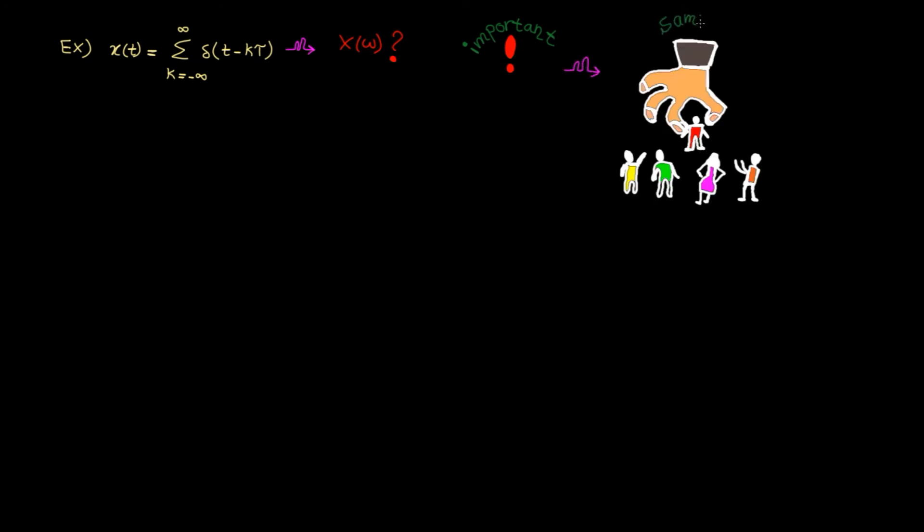Next example. Consider this periodic signal. The question is, what is the Fourier transform? This example is very easy and super important as I will use it in the next lecture to explain sampling. To solve this, first let's expand the sigma. Here's what we get.